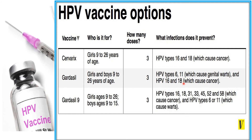Gardasil 9 is given to girls between 9 to 26 years of age and boys between 9 to 15 years of age, in three doses. This vaccine gives protection against HPV types 16, 18, 31, 33, 45, 52, and 58 — all of which cause cancer — and also against HPV types 6 and 11, which cause warts. This completes the vaccination program overview.